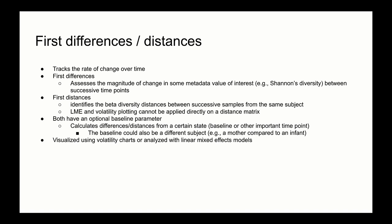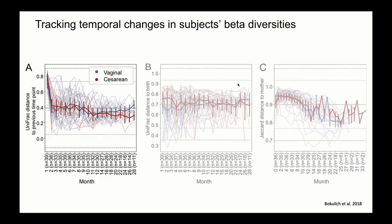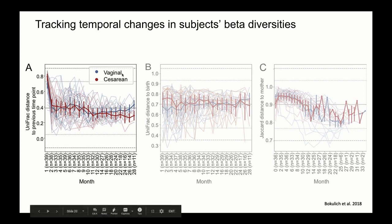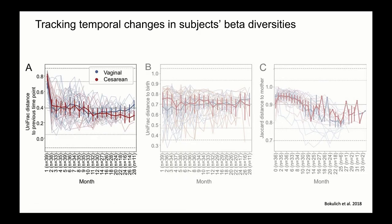In the QIIME 2 longitudinal paper, the authors used first distances to examine how beta diversity between successive samples collected from the same subject changed over time in each subject in the ECAM study. We can see that the first distance analysis has been piped into a volatility plot for visualization. Let's focus on panel A: we can see UniFrac distances tracked across time for two different groups — one where the mode of delivery was vaginal, and the other where the delivery mode was cesarean.